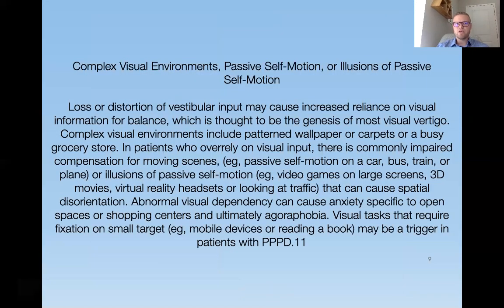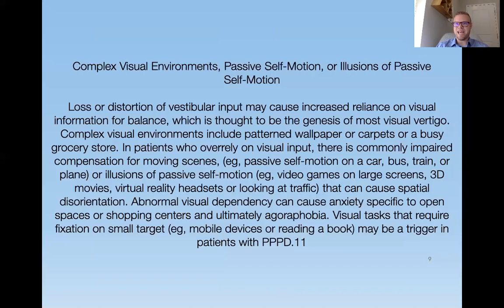With visual vertigo, complex visual environments and passive self-motion produce illusions of motion with incoming visual information. Things like being in a car, bus, train, video games, large screens, and 3D virtual environments can trigger these symptoms. They're very anxiety-provoking. People develop autonomic concomitants — headaches, lightheadedness, feeling like they're going to puke and pass out. They are no fun.